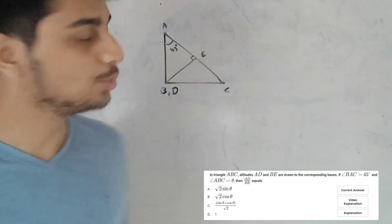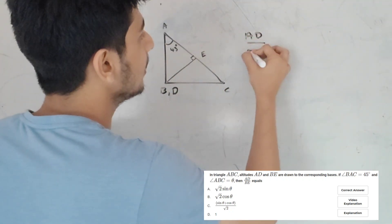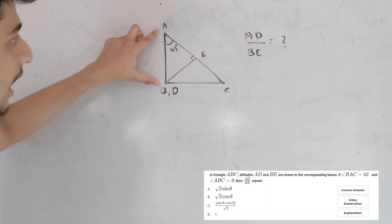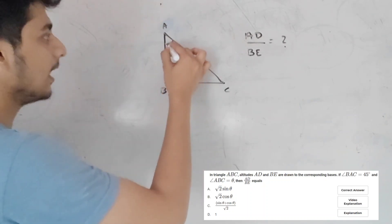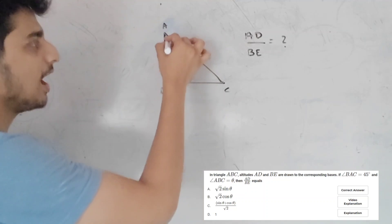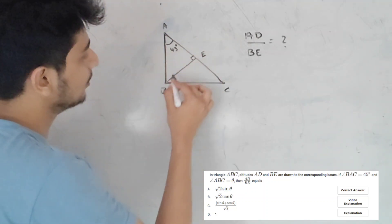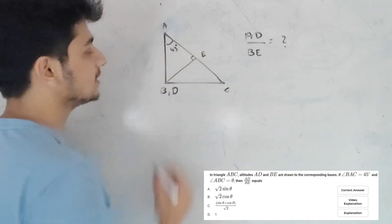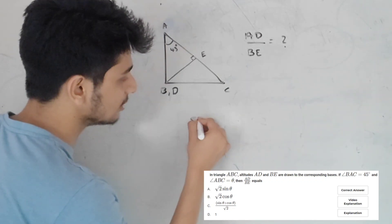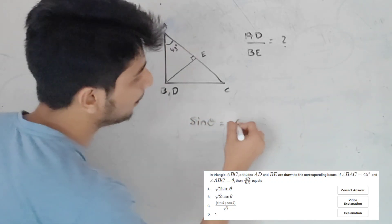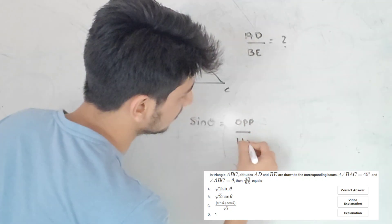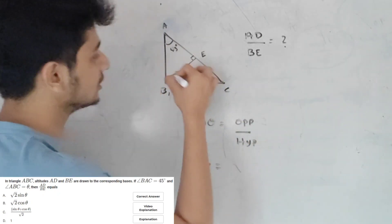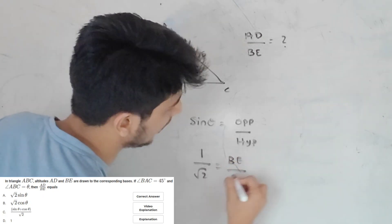Altitudes are 90 degrees. When the angle is considered, AD divided by BE — this triangle has AD as the hypotenuse and BE as the opposite side. Opposite side by hypotenuse — that is sin 45, which equals 1 by root 2. So, BE by AD equals sin 45.